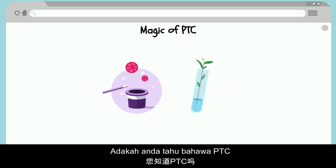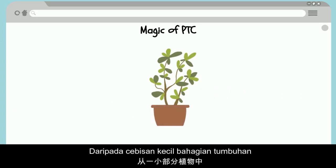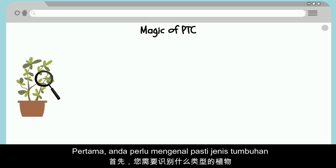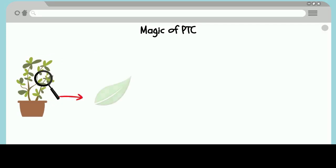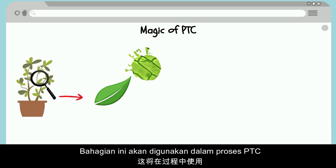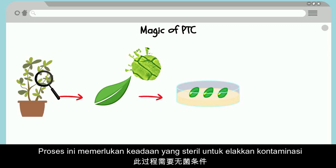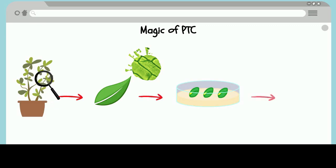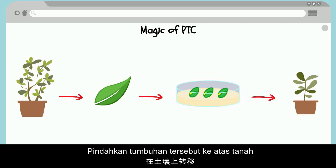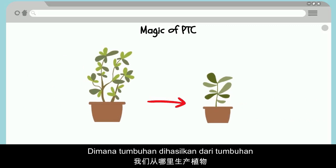PTC is like a kind of magic where it can grow plants from a small piece of plant parts. First, you need to identify what type of plant you want to culture, then acquire the usable plant part. Next, you culture it on a media plate under sterile conditions to avoid contamination. After a few weeks, plantlets will grow on the plate, and you can then transfer them to soil.